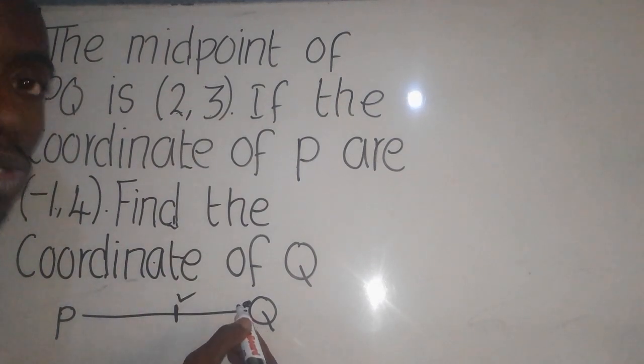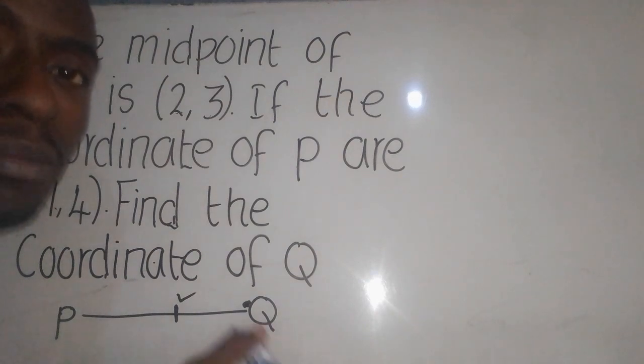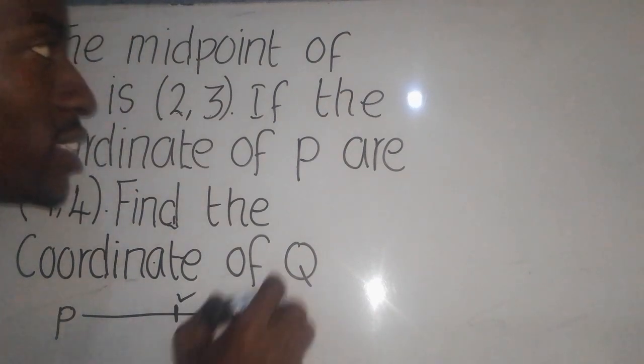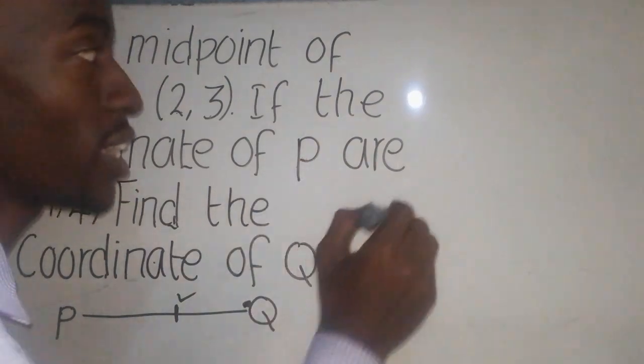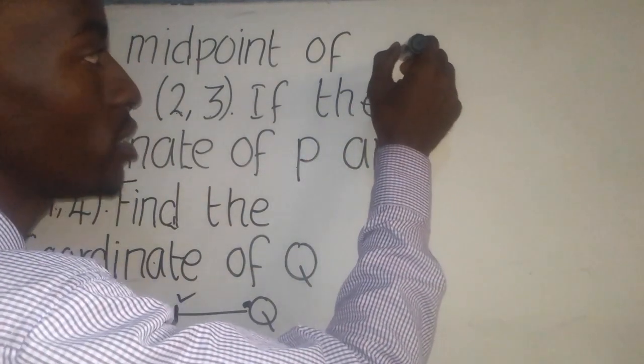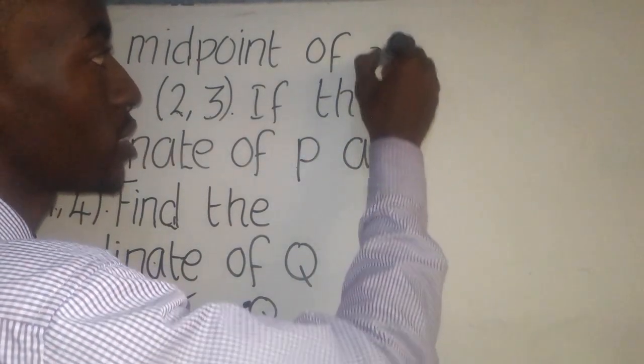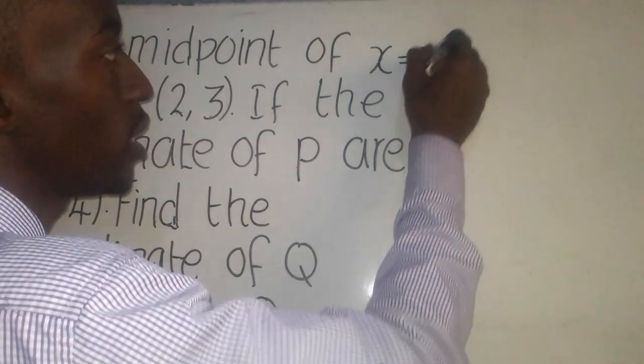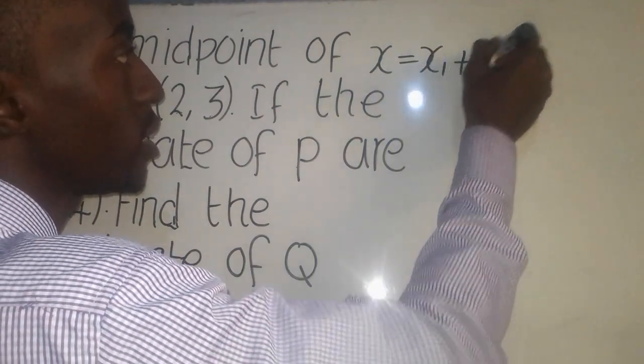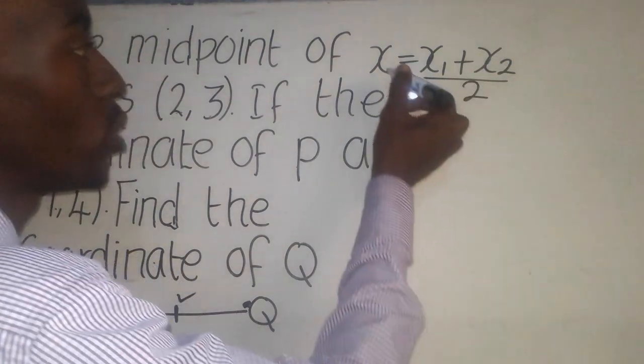And for you to find this coordinate, you need to use the formula for midpoint for each coordinate. So I'm going to start with X. So for the midpoint for X, you're going to say X is equal to X1 plus X2 over 2.